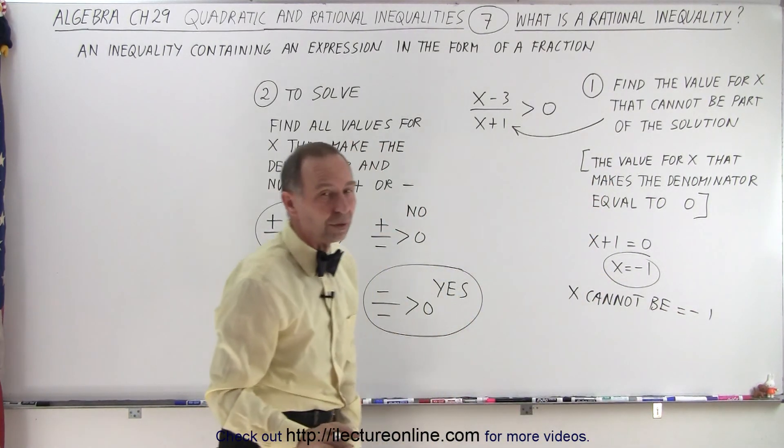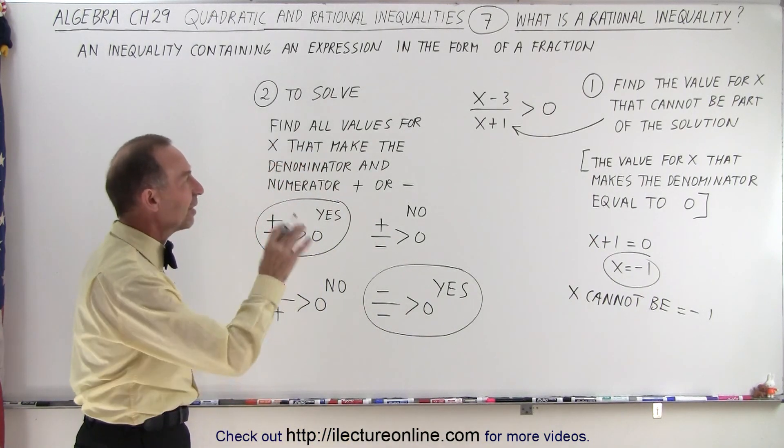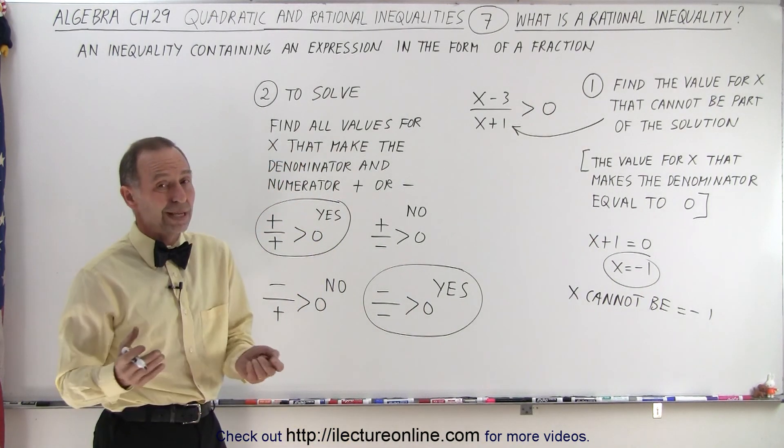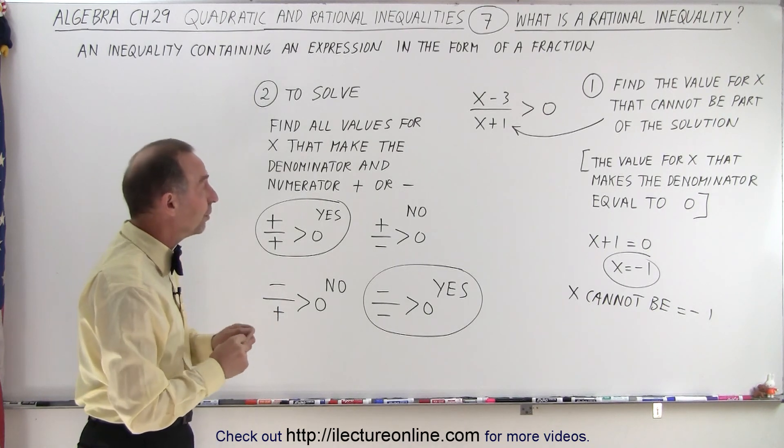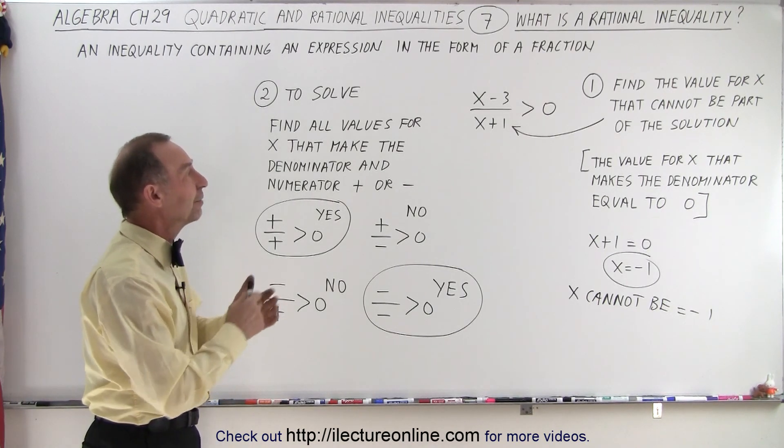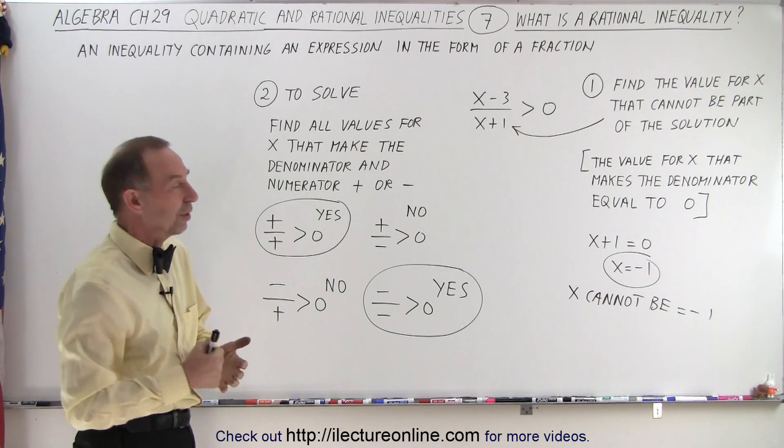That's a forbidden value, because x equals negative 1 makes the denominator equal to 0, which means it's an indeterminate form. It is a forbidden form. We cannot have a 0 in the denominator.